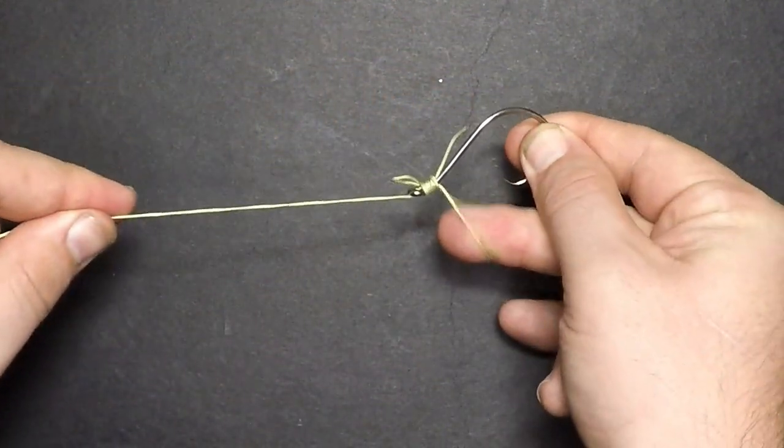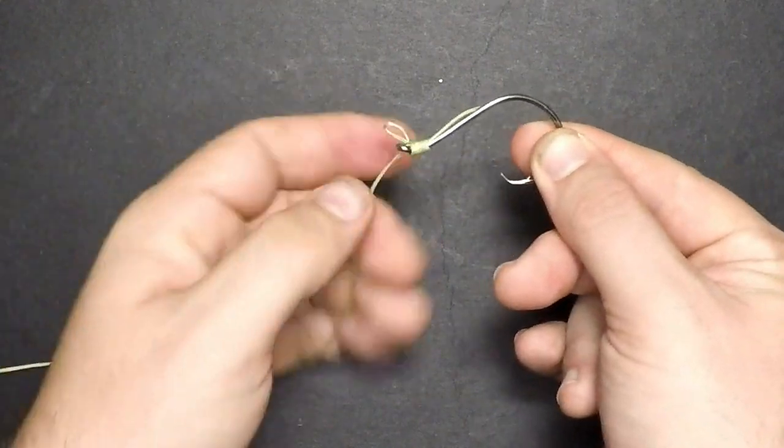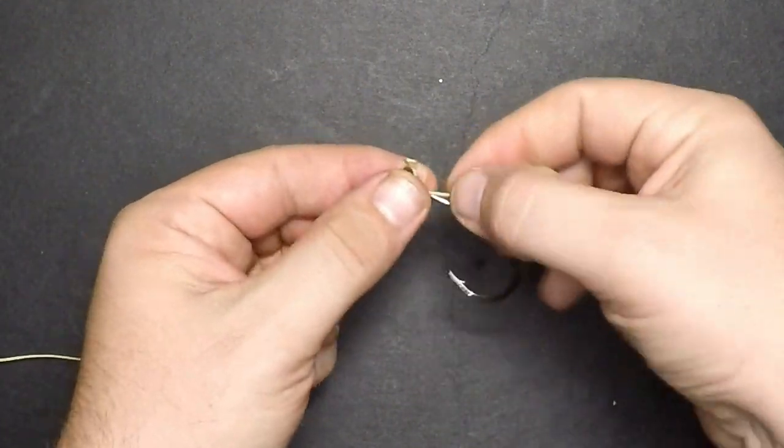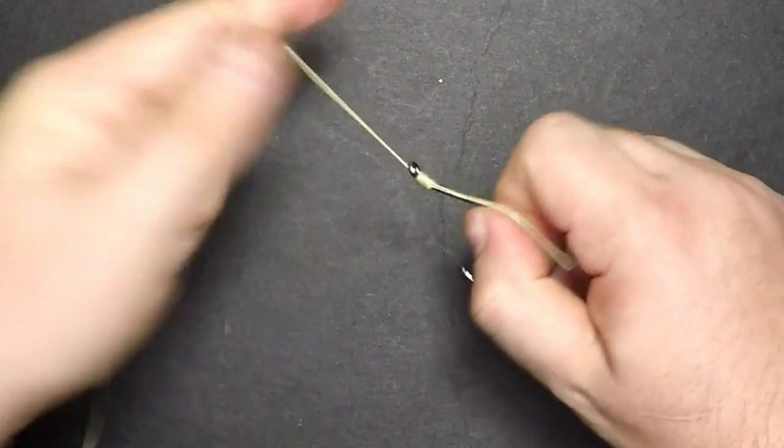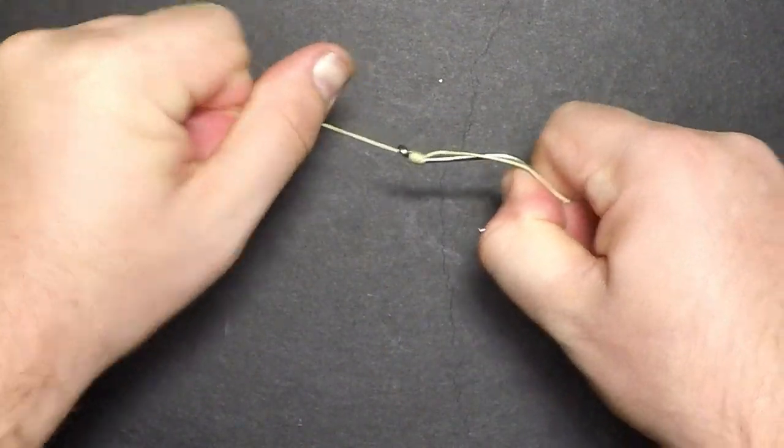Once you've made enough wraps, keep tension on that loop, and then pull on the main line to close the loop. Next, pull on the tag end to tighten the front of the knot. Follow that by pulling on the main line to tighten the knot against the eye.